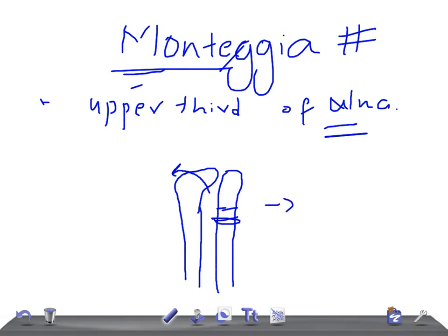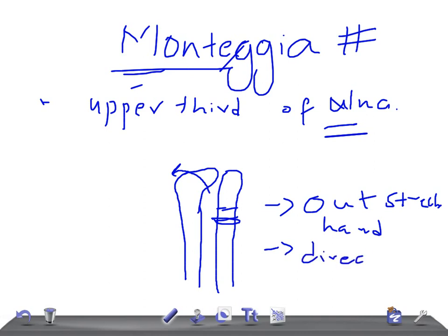The Monteggia fracture is caused when there is a fall on an outstretched hand — the hand should be fully pronated. This is also known as a hyperpronation injury. There can be another cause as well: a direct blow on the back of the upper forearm. So the two causes for Monteggia fracture are: first, a fall on an outstretched fully pronated hand (hyperpronation injury), and second, a direct blow on the back of the upper forearm.